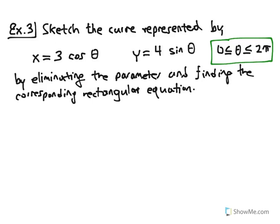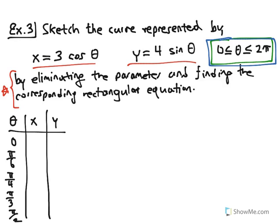Example 3: Sketch the curve represented by the parametric equations x = 3cosθ and y = 4sinθ, where θ ranges from 0 to 2π. We want to sketch the curve on that interval by eliminating the parameter and finding the corresponding rectangular equation. But first, let's look at some points we can plot.